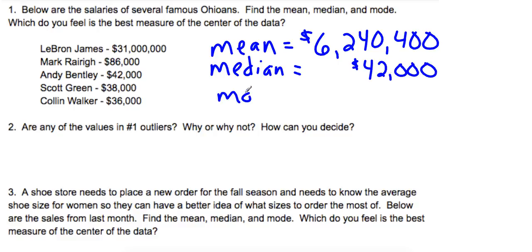And remember, the mode is the one that occurs most often, and there is none in this. So the second question was this, which do you feel is the best measure of the center of the data? If you took these five gentlemen, how would you describe the middle, their average salary?